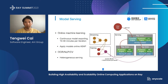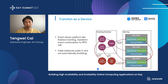Ant Group's whole online machine learning system is built on Ray. The training model will continuously export a new model every 10 to 30 minutes, and we need to apply the latest model to serving as soon as possible. We are also exploring another scenario: in front of serving, we use Knative Eventing to transform event consumption to RPC calls. For now, one user's function will only be executed in one actor, but we may try some new distributed functions on Ray in the future.